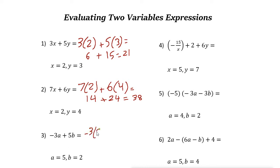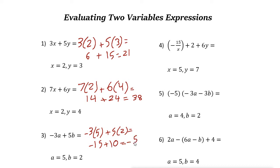Next, we have negative 3a plus 5b, where a equals 5 and b equals 2. So negative 3 times 5 plus 5 times 2 gives us negative 15 plus 10, which equals negative 5. The value of negative 3a plus 5b is negative 5.